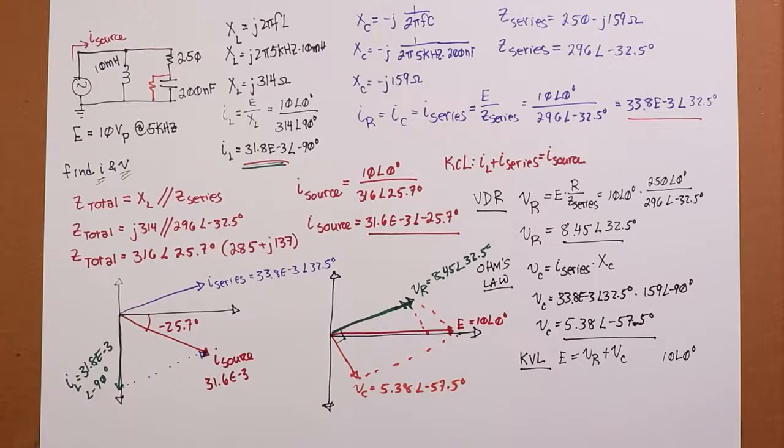So KVL is going to tell us that the source voltage should split between VR and VC. So if I add this and this, we should get E, which is 10 at an angle of zero. Time to do another phasor diagram. The exciting world of phasor diagrams.